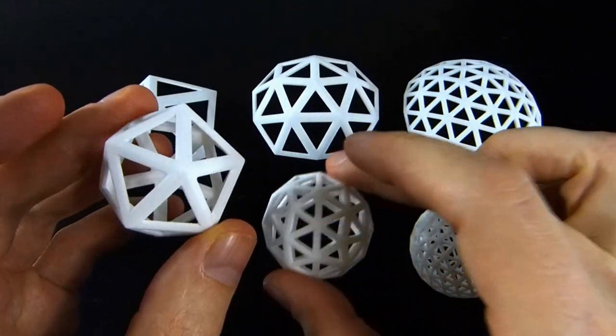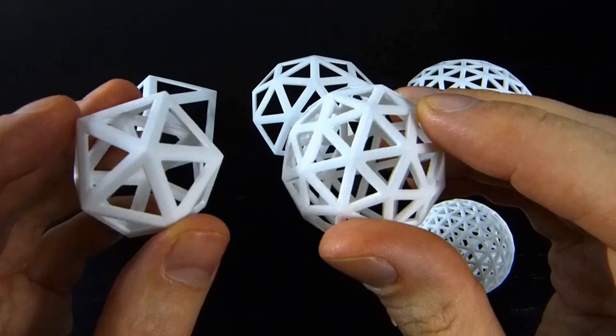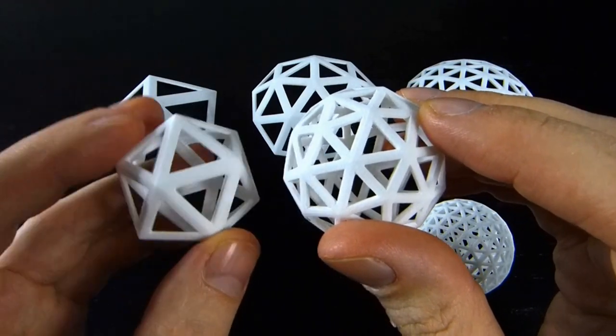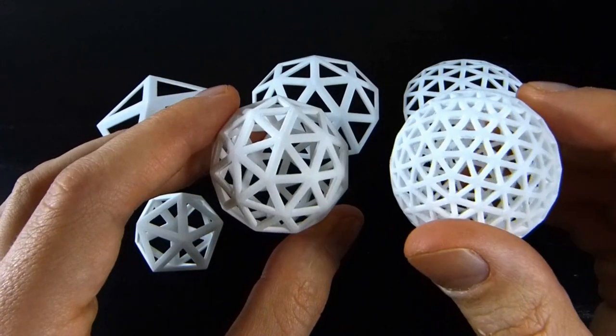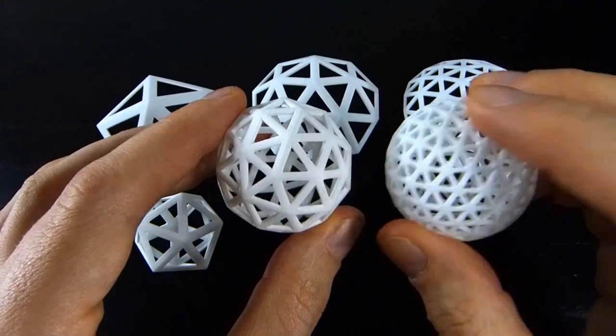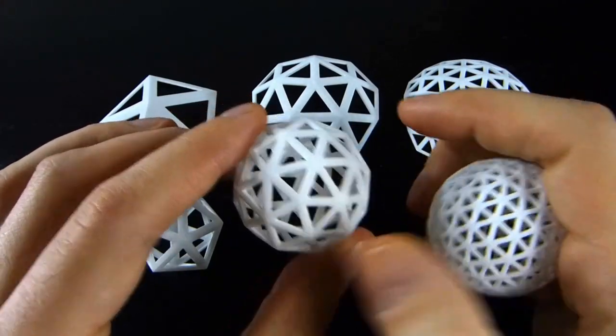Then start subdividing the faces. So this guy has four triangular faces for each one triangle of the icosahedron, and you can keep going. So this one has, again, four triangular faces for each one triangle of this, so 16 triangular faces for each face of the icosahedron.